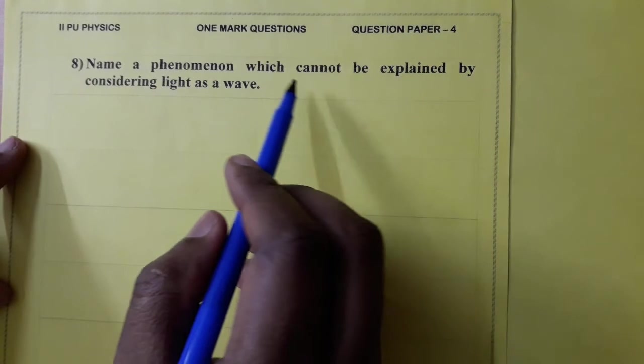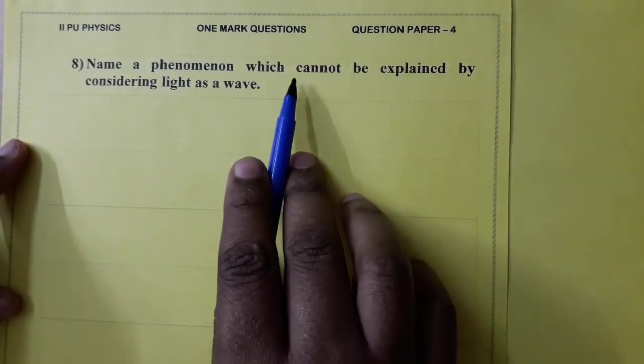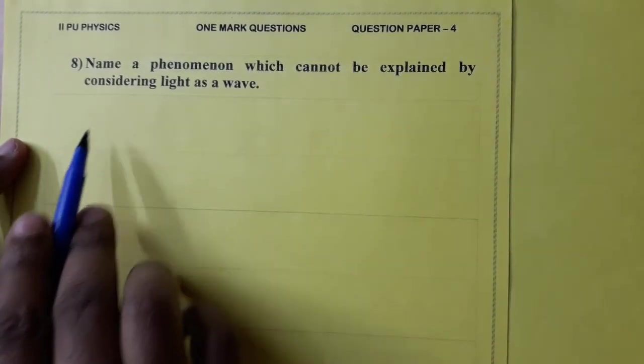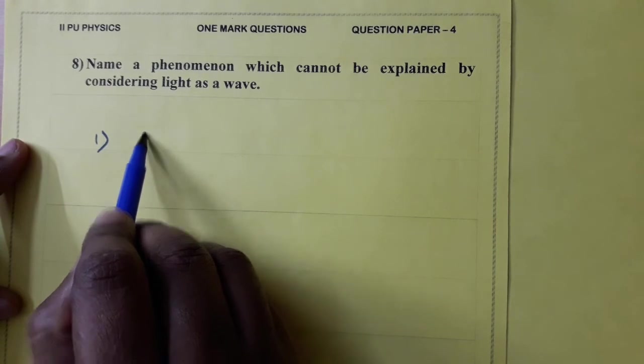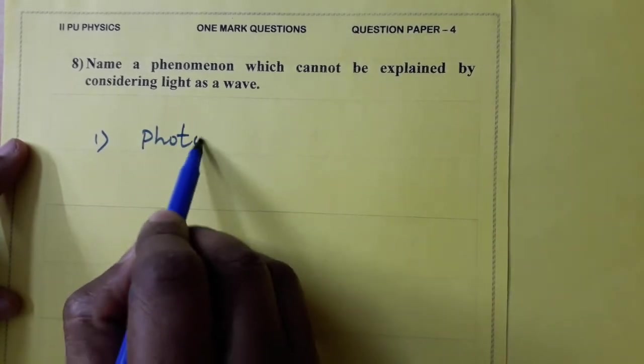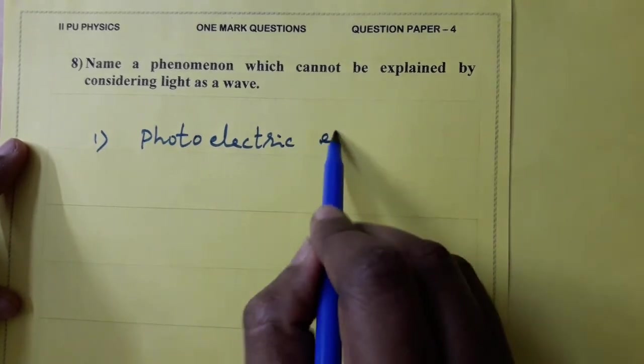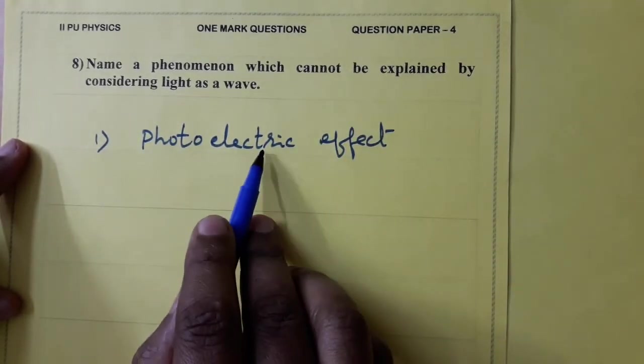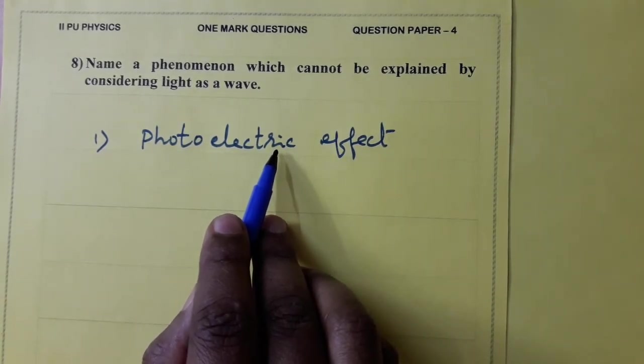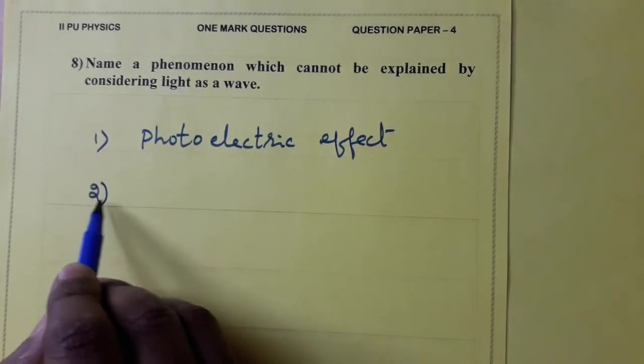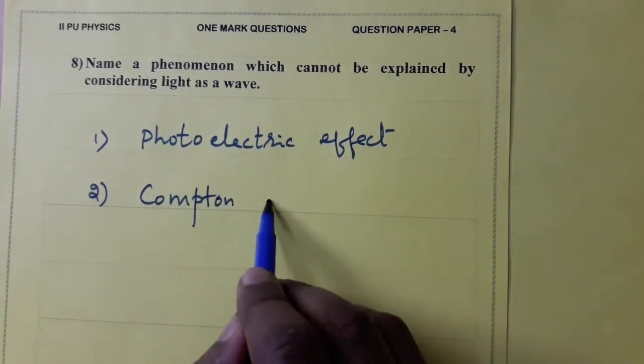Name the phenomenon which cannot be explained by considering light as a wave. Though it is for one mark, let us write two answers. First one, photoelectric effect. Because photoelectric effect can be understood using particle nature of light. Second is Compton effect.